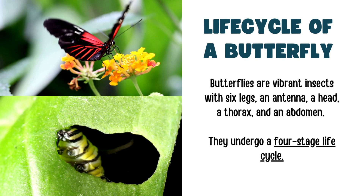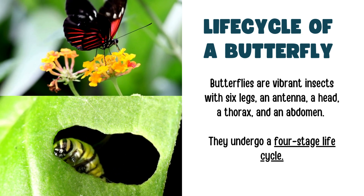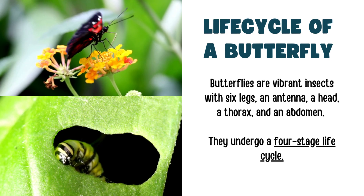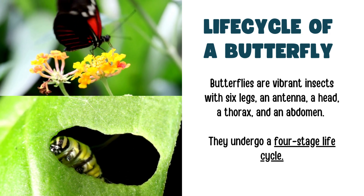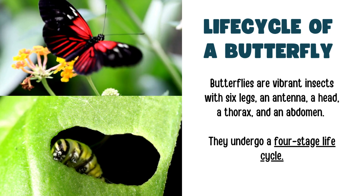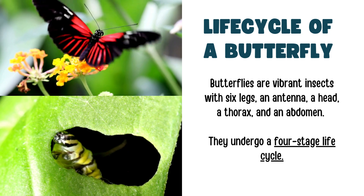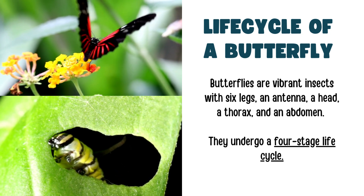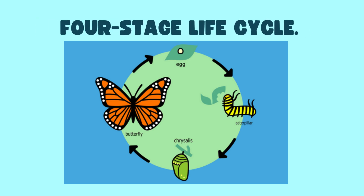Now let's look at the life cycle of a butterfly. Butterflies are vibrant insects with six legs, antenna, a head, thorax, and an abdomen. They undergo a four-stage life cycle. The four stages include the egg, a caterpillar stage, chrysalis, and the grown-up adult stage.